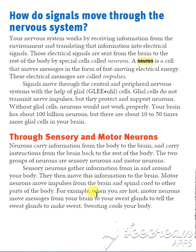For example, motor neurons move messages from your brain to your sweat glands to tell the sweat glands to make sweat. And when the sweat comes out, the air makes you feel better because of the sweat.